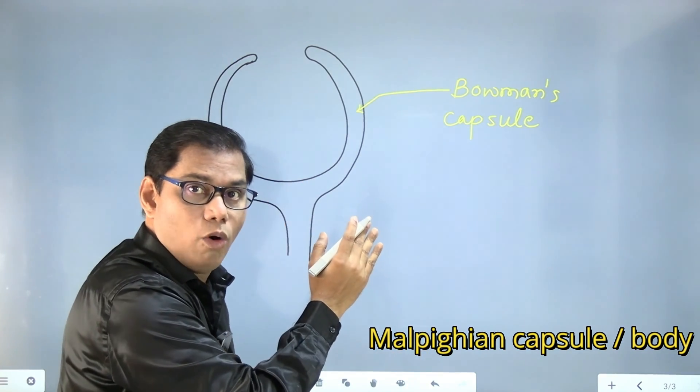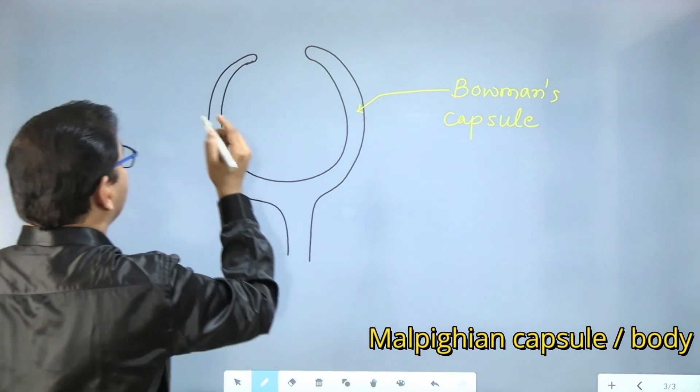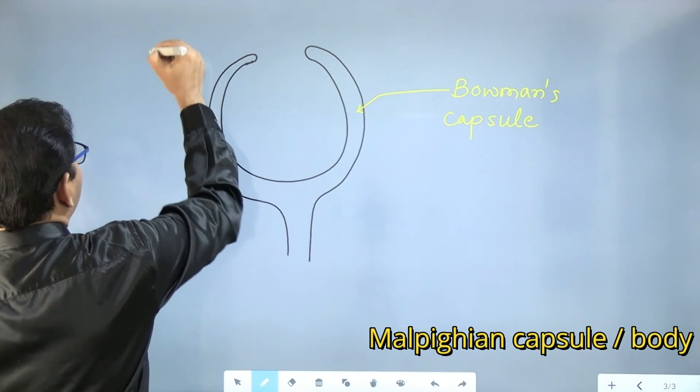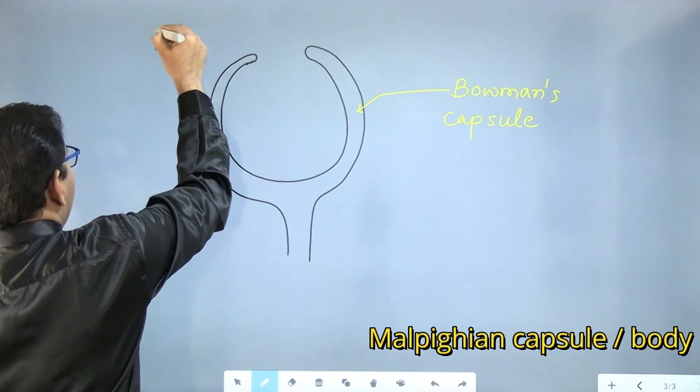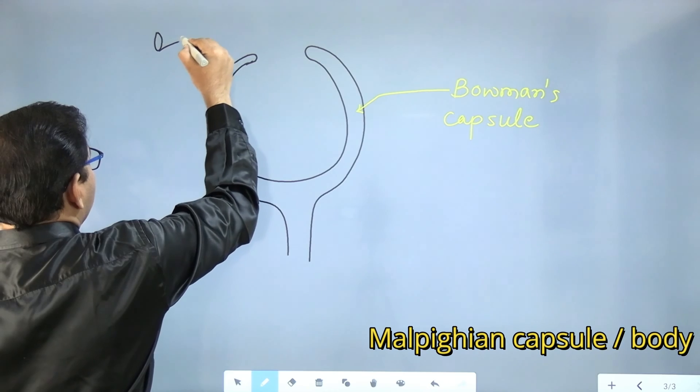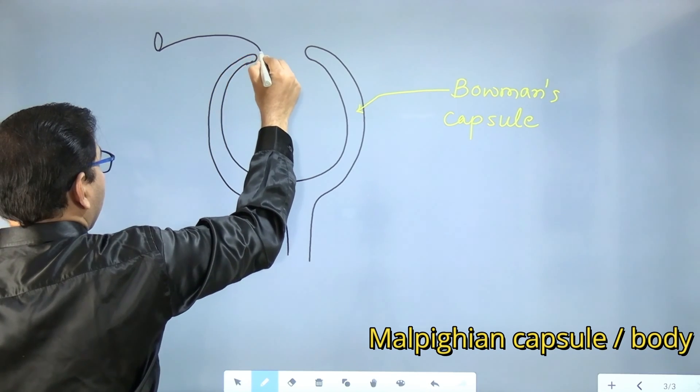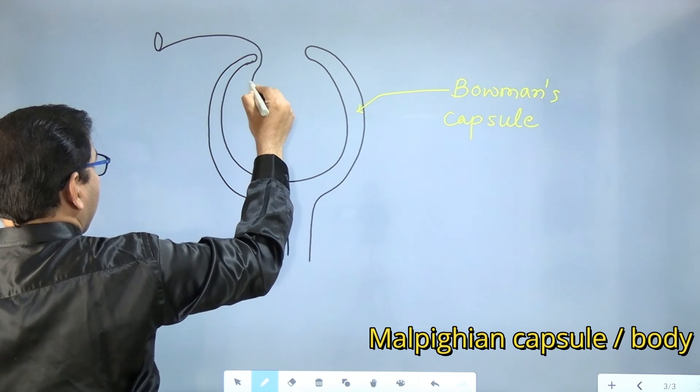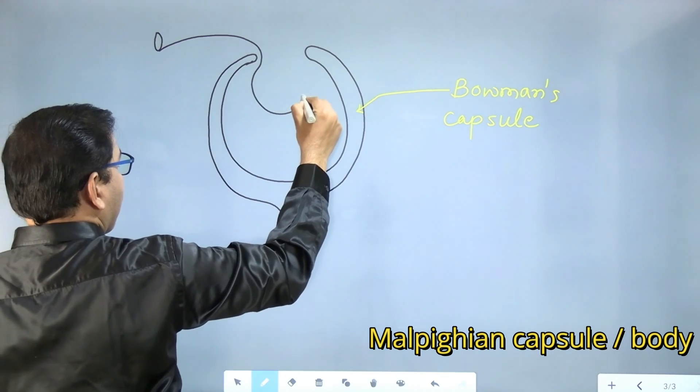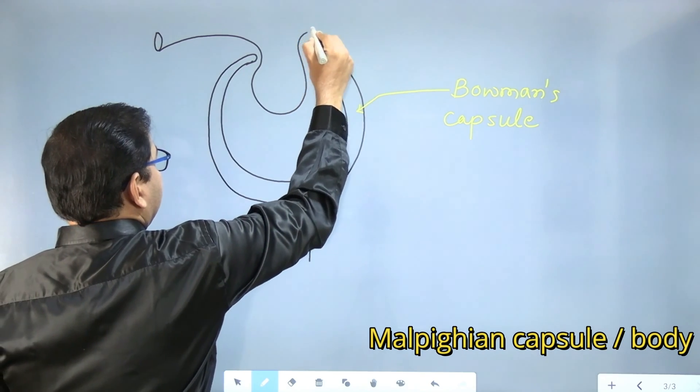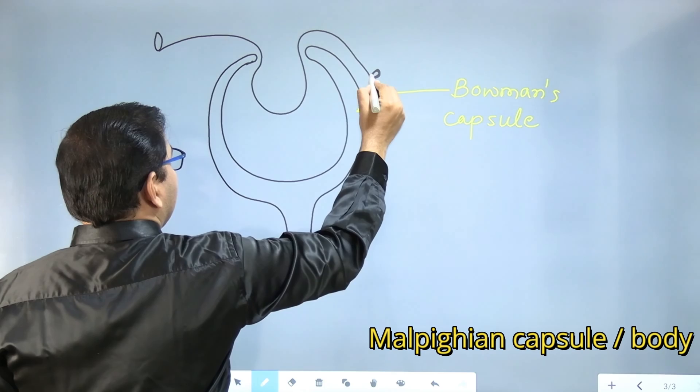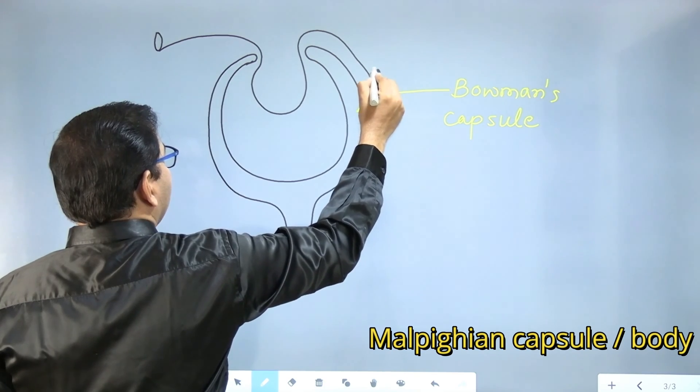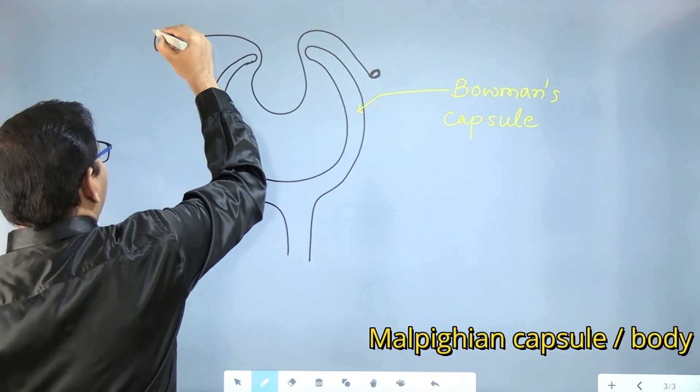After drawing Bowman's capsule, we are about to draw a very important part: a blood vessel or a blood capillary with a bigger diameter. And when it comes out, it is a blood vessel or blood capillary with a smaller diameter.